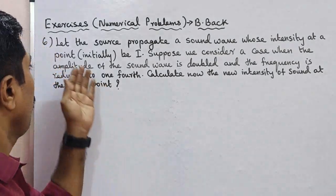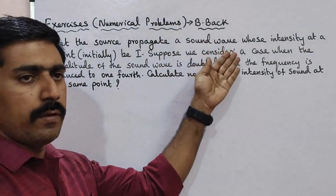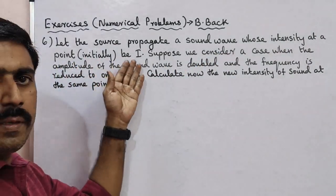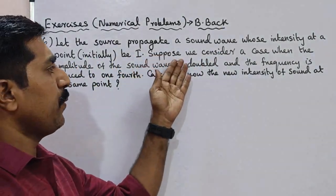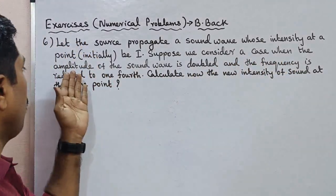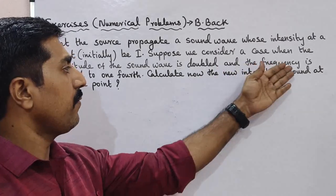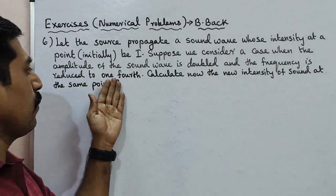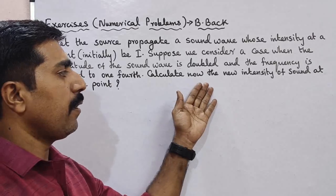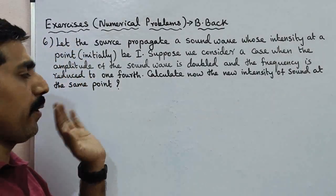We are going to talk about a source that propagates a sound wave whose intensity at a point is I. We consider a case when the amplitude of the sound wave is doubled and the frequency is reduced to one-fourth. Calculate the new intensity of sound at the same point.